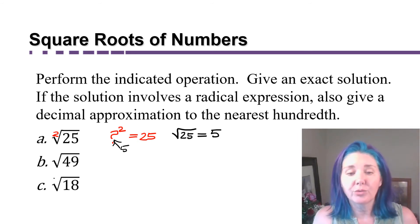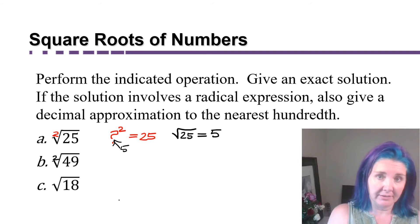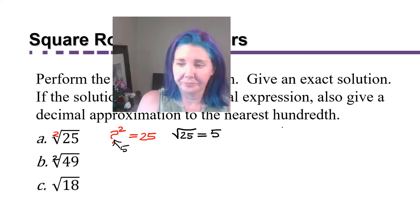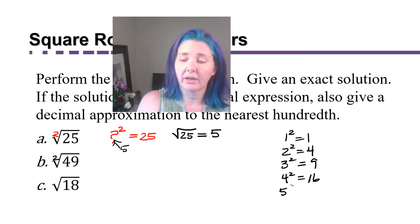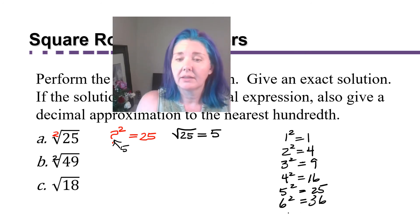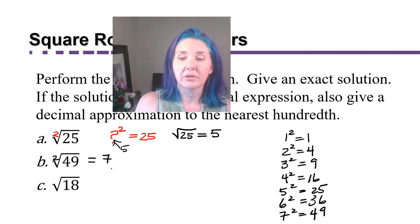So when I say what's the square root of 49, you think: what number do I multiply by itself to get 49? If you're not sure, just start listing them. One squared equals one, two squared equals four, three squared equals nine, four squared equals 16 — they get big pretty fast. Five squared equals 25, six squared equals 36, seven squared equals 49. So the square root of 49 is seven.